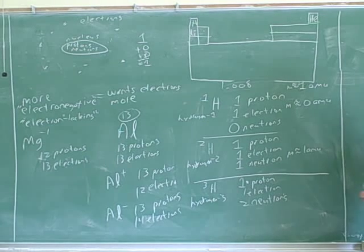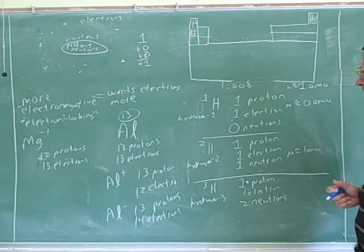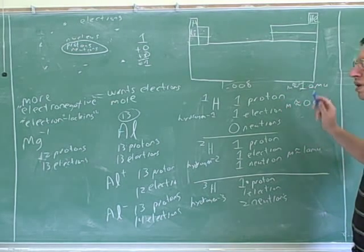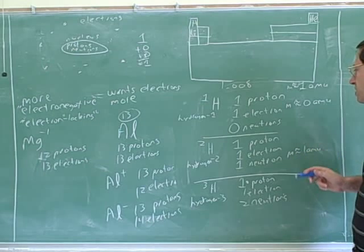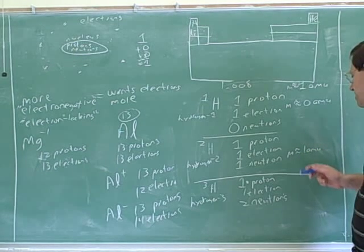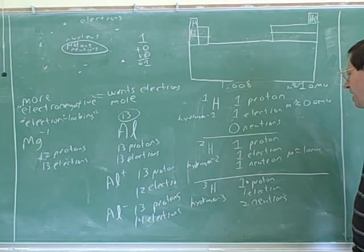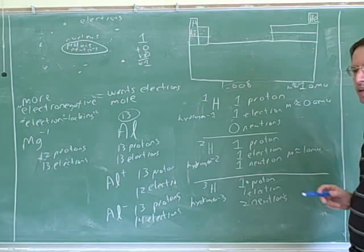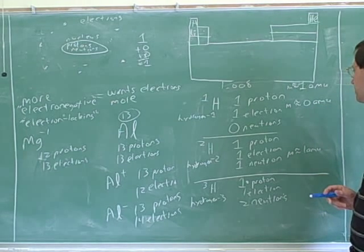So we've gone through the masses. Protons have a mass of one atomic mass unit, neutrons have a mass of one atomic mass unit, and electrons have a mass of about zero atomic mass units.